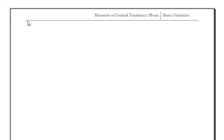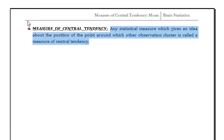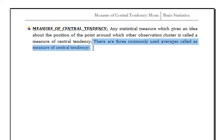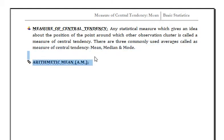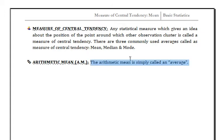In this video we discuss the measure of central tendency. Any statistical measure which gives an idea about the position of the point around which other observations cluster is called measure of central tendency. For any data, the most representative number is known as central tendency. There are three commonly used averages: mean, median, and mode.